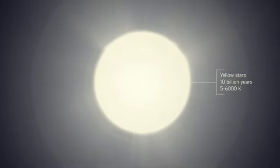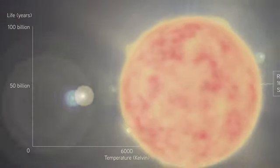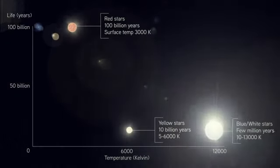No star lives forever. Our own Sun has a lifespan of about 10 billion years, and we've probably reached the halfway point already. The less massive stars use up their fuel more slowly, and last longest.